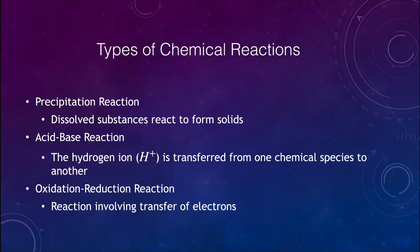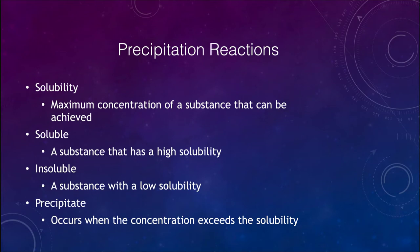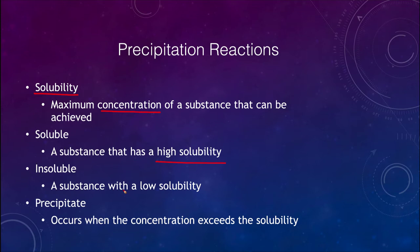Let's start with precipitation reactions. First, what is the solubility of a substance? That is how much material can be dissolved in water — the maximum concentration of a substance that can be achieved. A soluble substance has high solubility, meaning a lot can be dissolved. An insoluble substance has low solubility with a much lower concentration. A precipitate occurs when the concentration exceeds the solubility — you've exceeded the maximum and something precipitates out of solution.